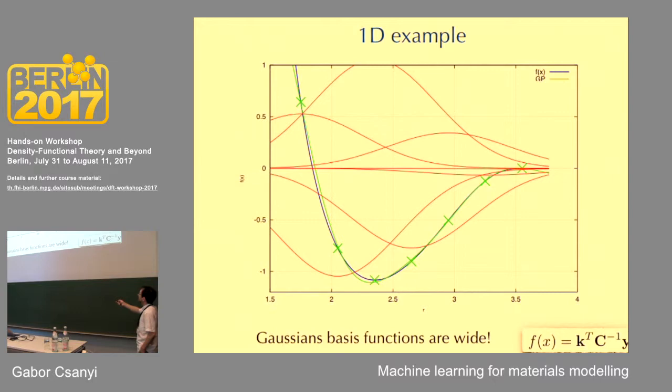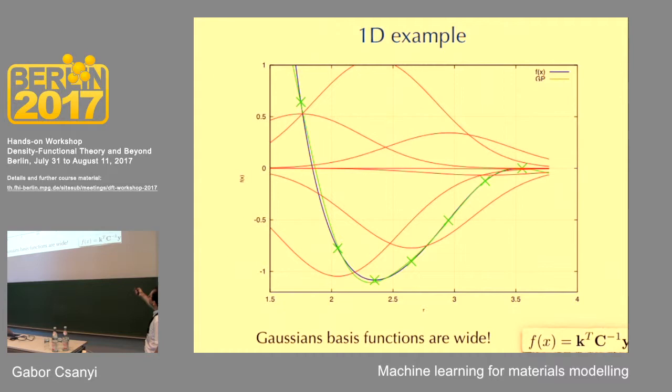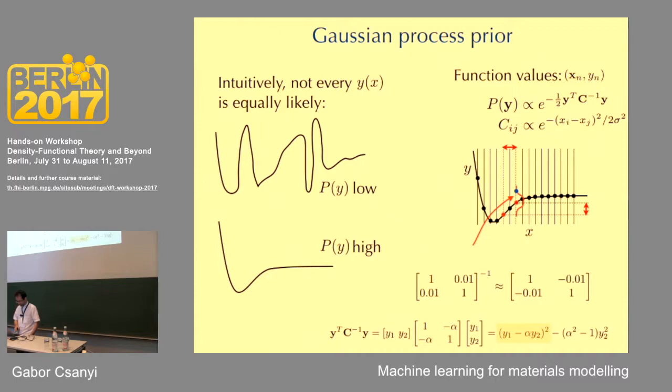Here's a 1D example. Here's the one-dimensional function I'm trying to fit, and I get data points at these green crosses. Each of the red curves is a Gaussian centered on one of the green crosses, drawn in proportion. If you add up all the red curves, you get the green curve, and it matches the target blue curve very accurately. This is what machine learning looks like up close, but in very high dimension, which is very hard to think about.